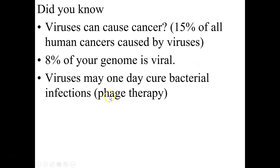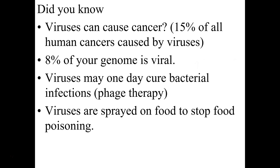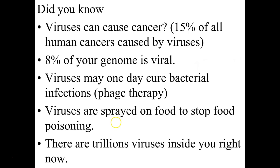Viruses are already sprayed on food to stop food poisoning, because these viruses can kill bacteria that make us ill — it's actually sprayed on food you buy at the grocery store. There are trillions and trillions of viruses inside you right now, so these little things called viruses are very, very common.